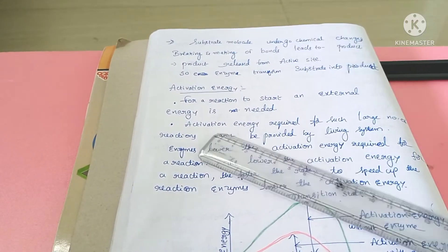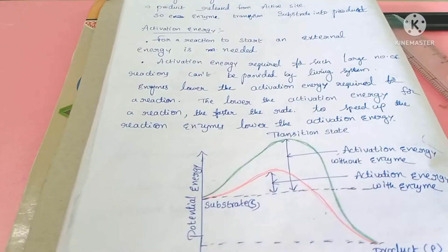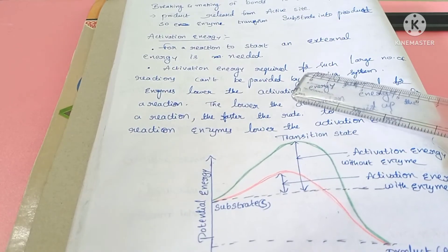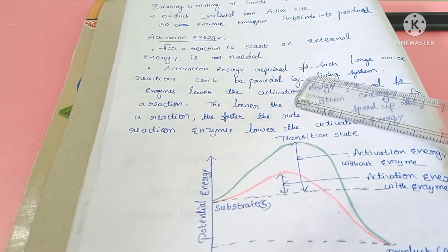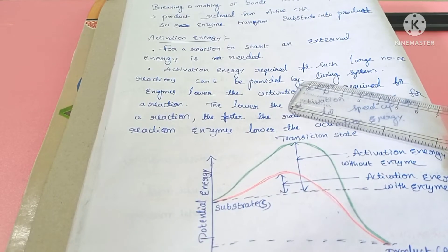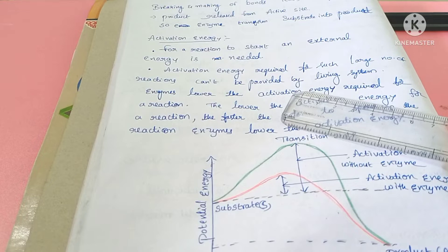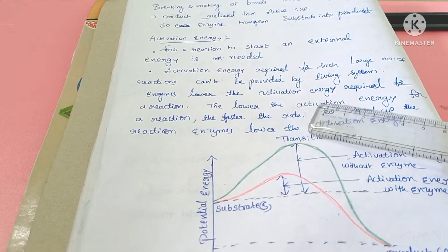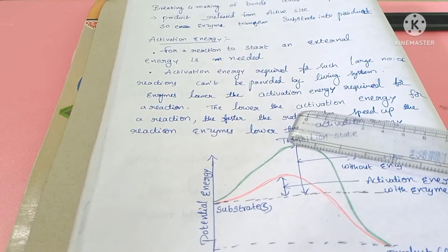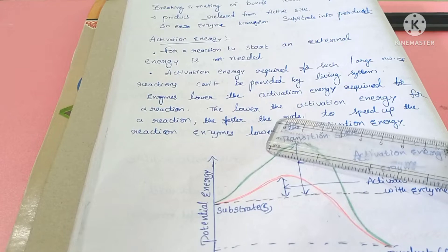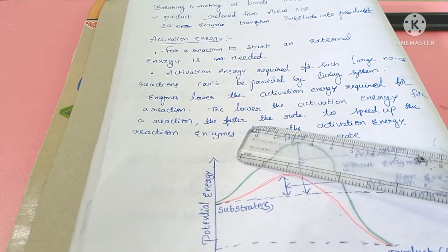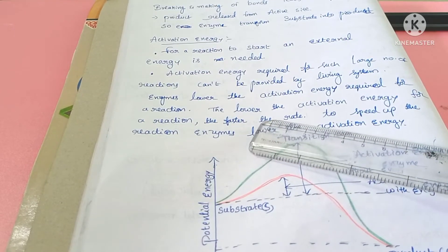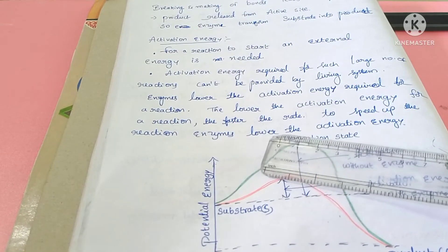The next concept is activation energy. Activation energy is called external energy. There are many types of reactions, and it also applies to living systems. Enzymes work by reducing activation energy. When the activation energy is reduced, the rate of reaction becomes very fast. So, the lower the activation energy, the faster the rate of reaction.